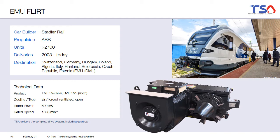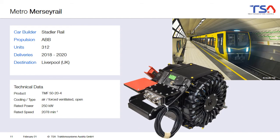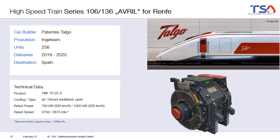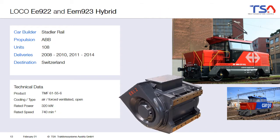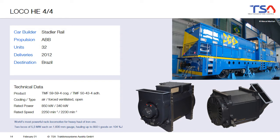An example is the Stadler EMU Flirt, where open forced ventilated motors are used. Also in the UK at the Merseyrail in Liverpool, and it is also quite common to use them in high speed trains, for example for the new Avril trains. This cooling system is especially attractive for operation at low speed, for example for shunting locomotives. This cooling concept is also used for rack locomotives — for example the most powerful rack locomotive in the world operating in Brazil — where it is used for two different kinds of motors: one driving the cog wheel and the other driving the normal adhesion wheels.